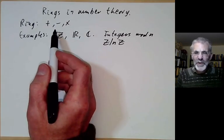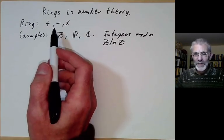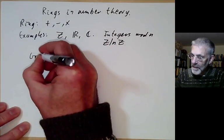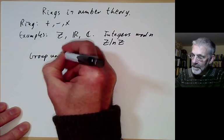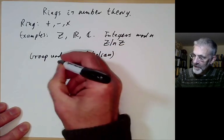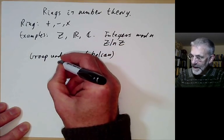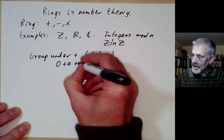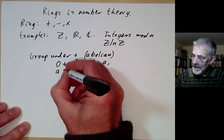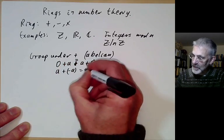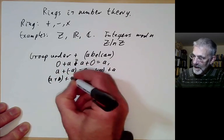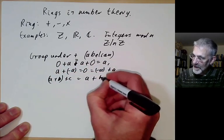Saying they satisfy the usual rules of high school algebra is a bit vague. More precisely, the ring is a group under addition — more precisely, an abelian group. So we have an identity: 0 + a = a + 0 = a. We have inverses: a + (−a) = 0 = (−a) + a. And we have associativity: (a + b) + c = a + (b + c).